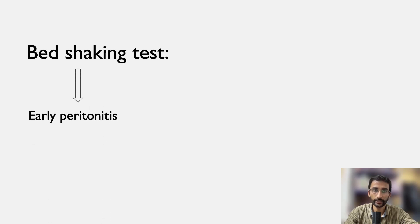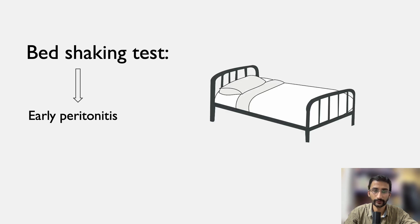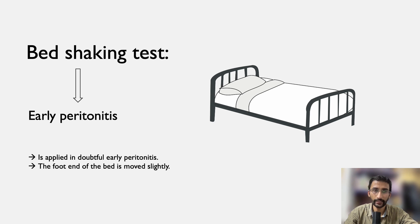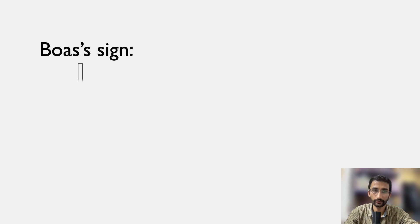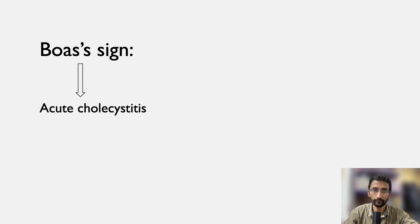Bed shaking test is done in case of early peritonitis. It is applied in doubtful early peritonitis. The foot end of the bed is moved slightly, which will evoke pain at the position of the inflamed organ.